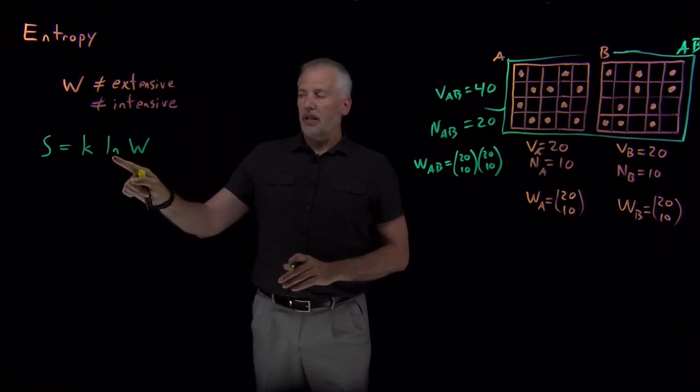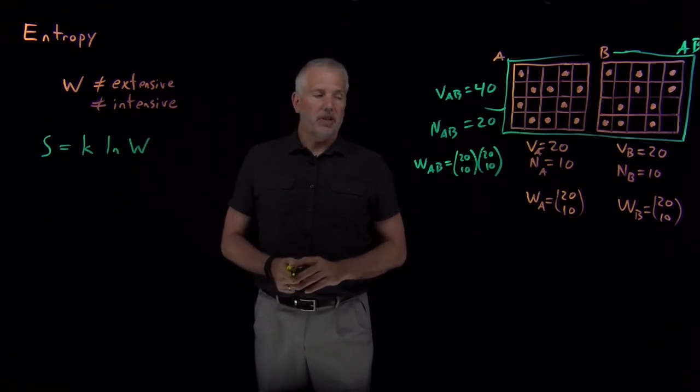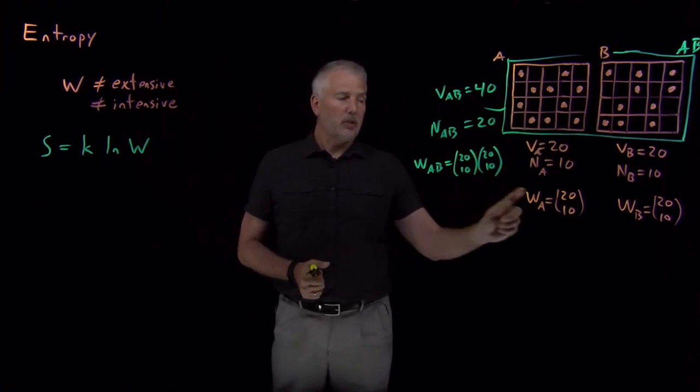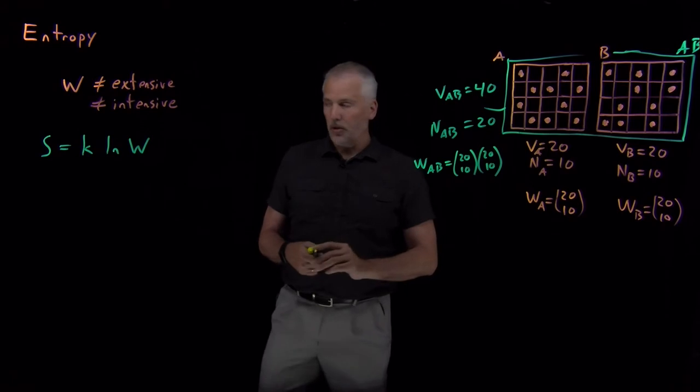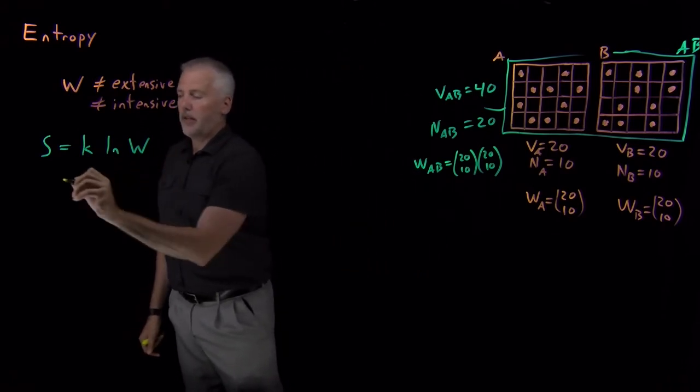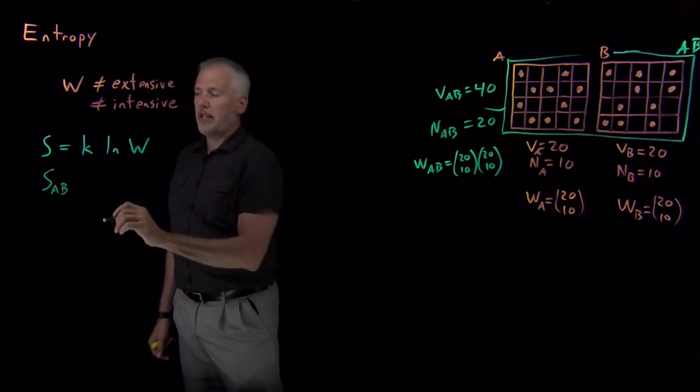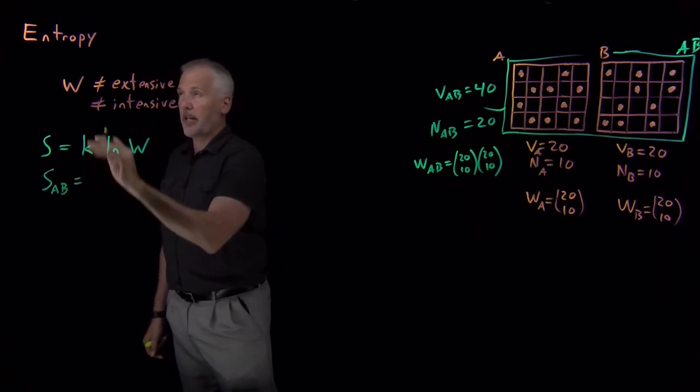The reason I've taken the log of the multiplicity is because I know, based on how logs work, that the log of a product is equal to the sum of the logs. So if I wanted to know this new property that I've defined, the entropy, it turns out this will be the entropy.